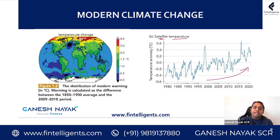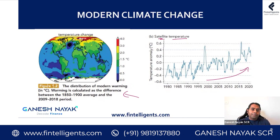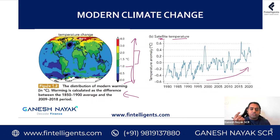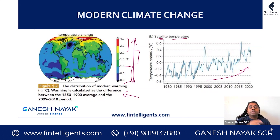Let us come to the next diagram, which is Figure 1.2. What they have done is shown how warming has happened across the globe. There is a color scale — if you are in the blue range, the general change has been around less than one degree Celsius. If you are in the green zone, the average temperature change is around 1.5 degrees Celsius. If you are in the yellow or red zone above that, the average change in temperature has been very high, meaning warming has been very severe for those regions.